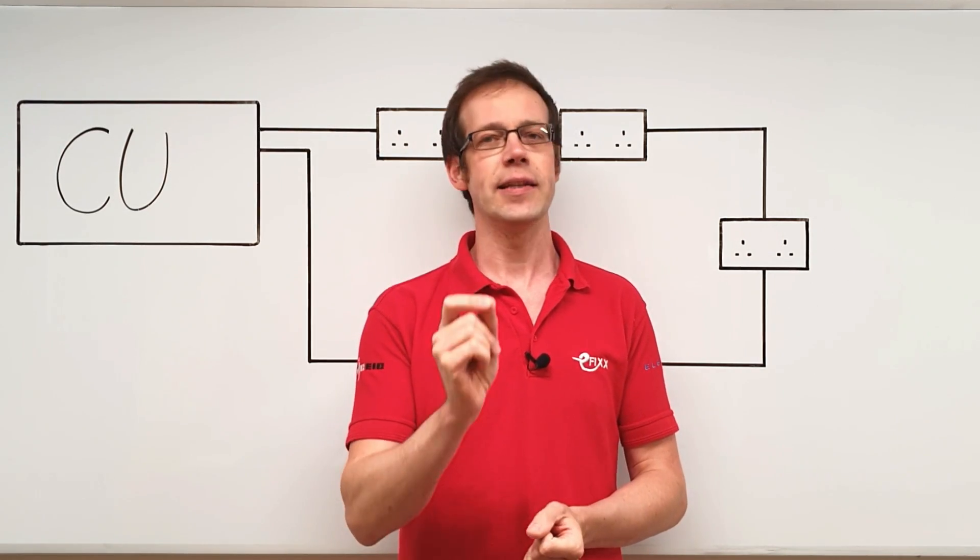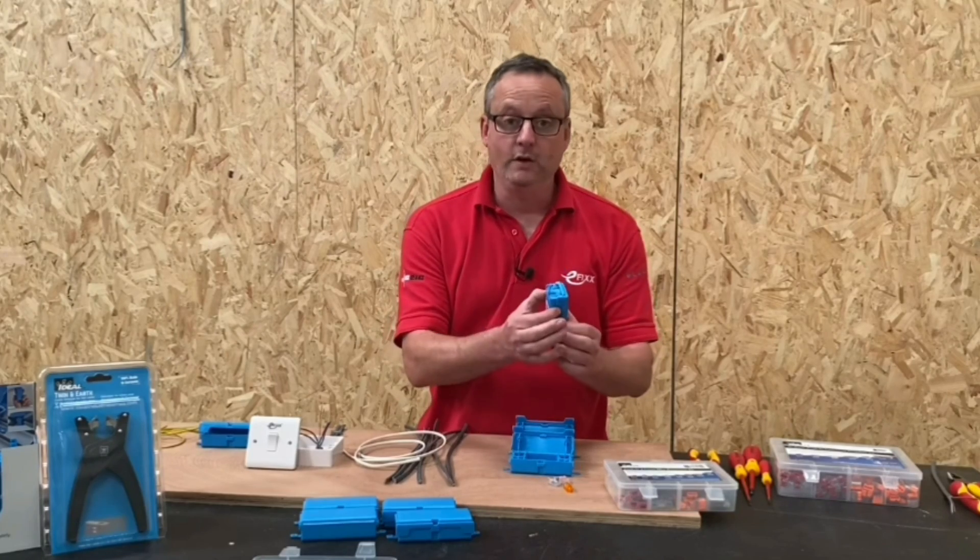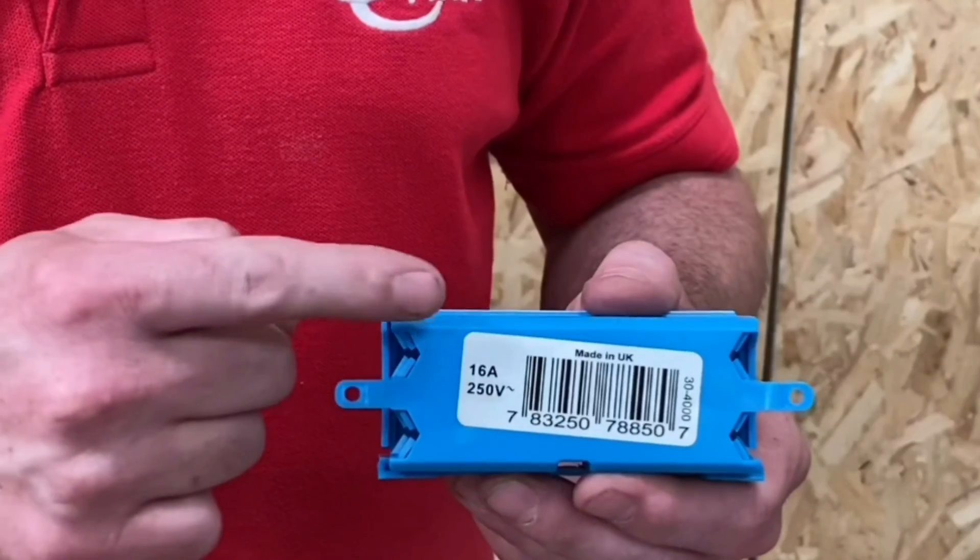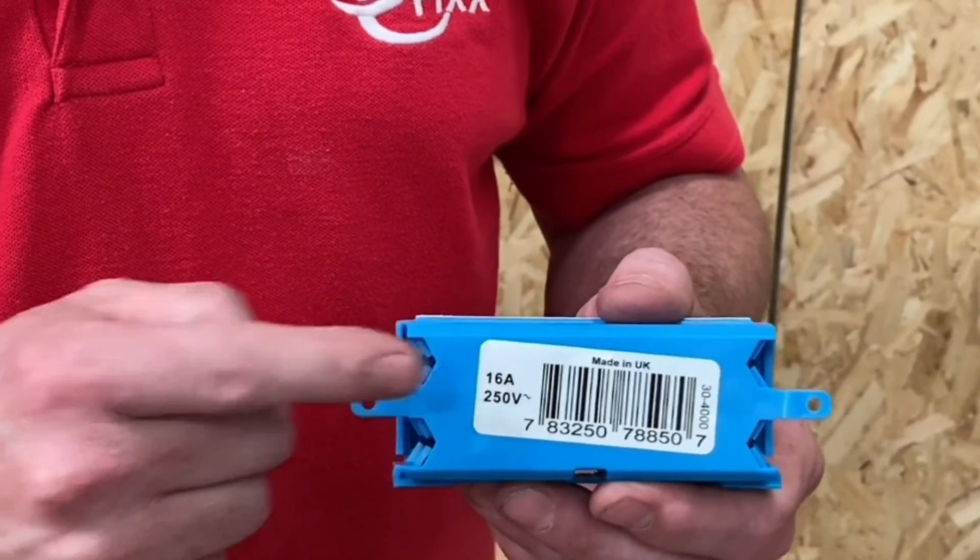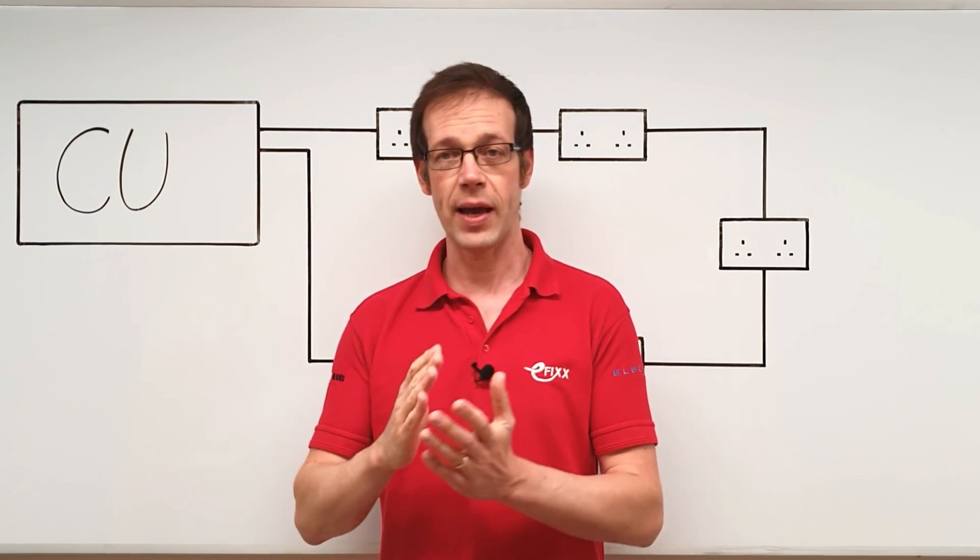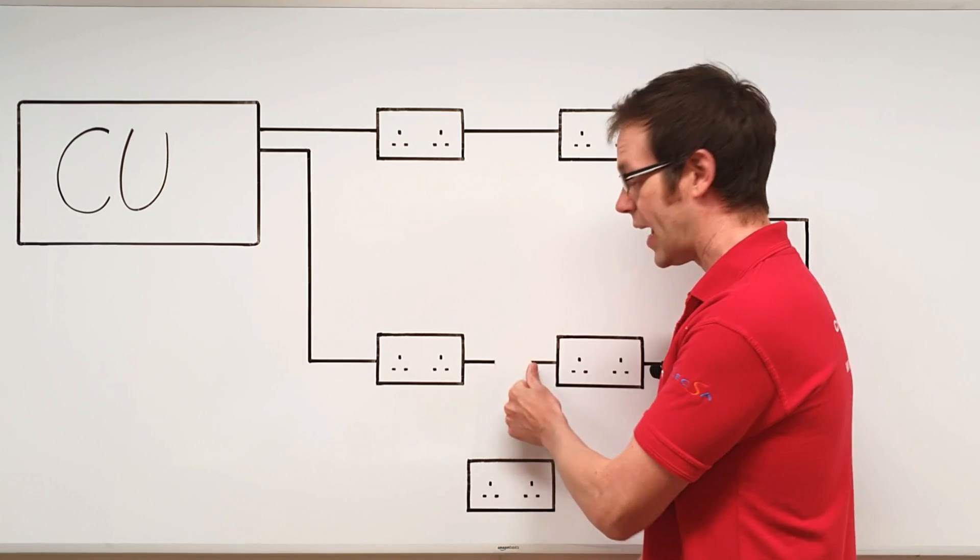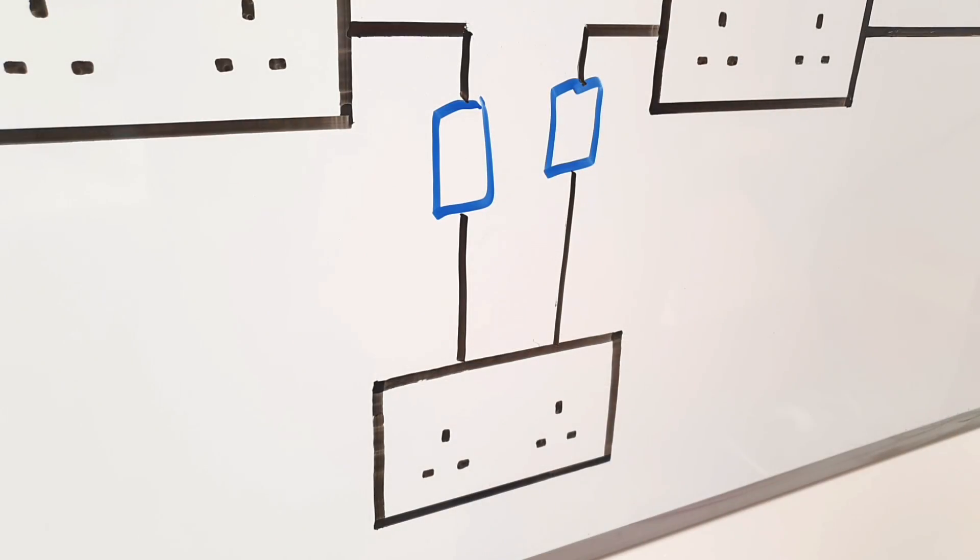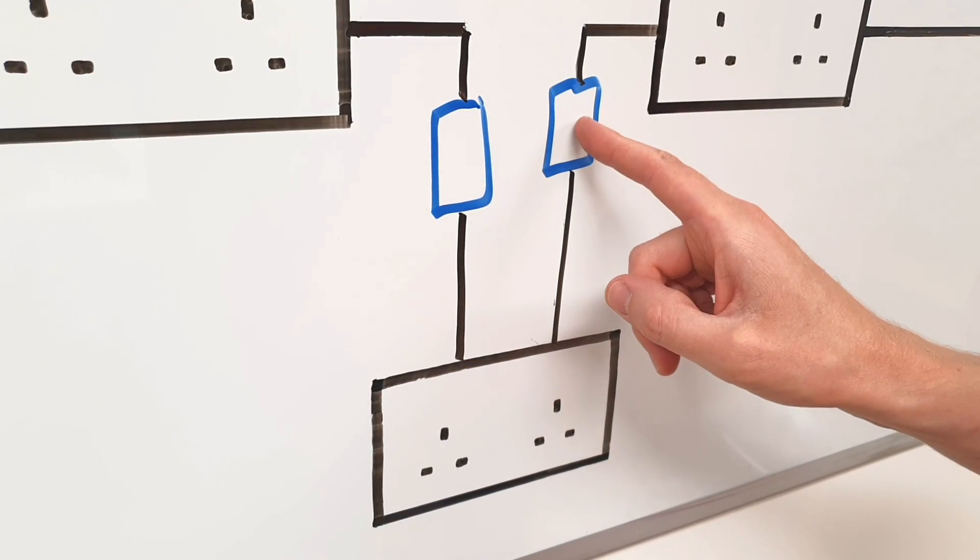Our viewer is referring to the fact that Gary stated in the video that you couldn't use this connector box to extend the cable in a ring final circuit. Be Safe London Electrical seems to be asking if we could perhaps split the ring like this and then insert one of the connector boxes in each cable to extend the ring to a new socket.